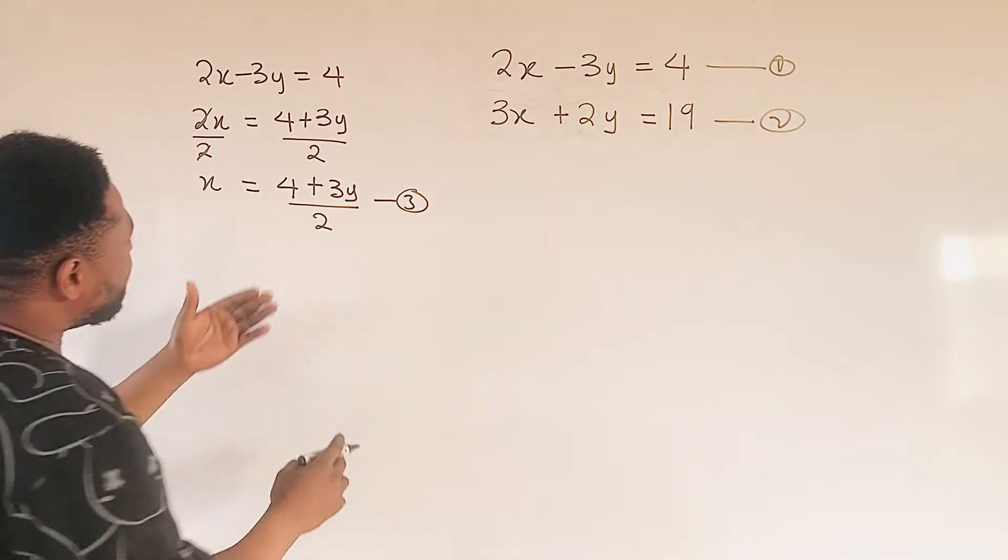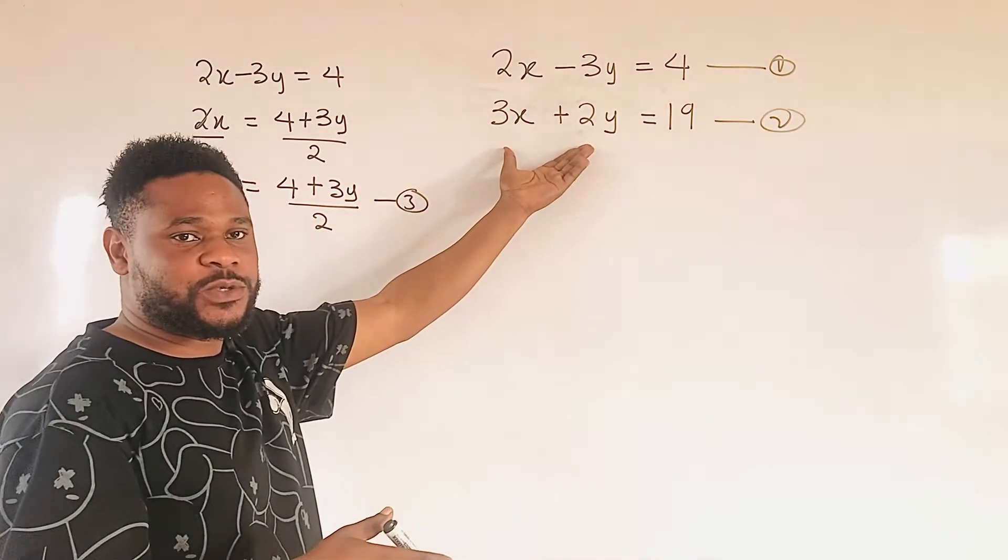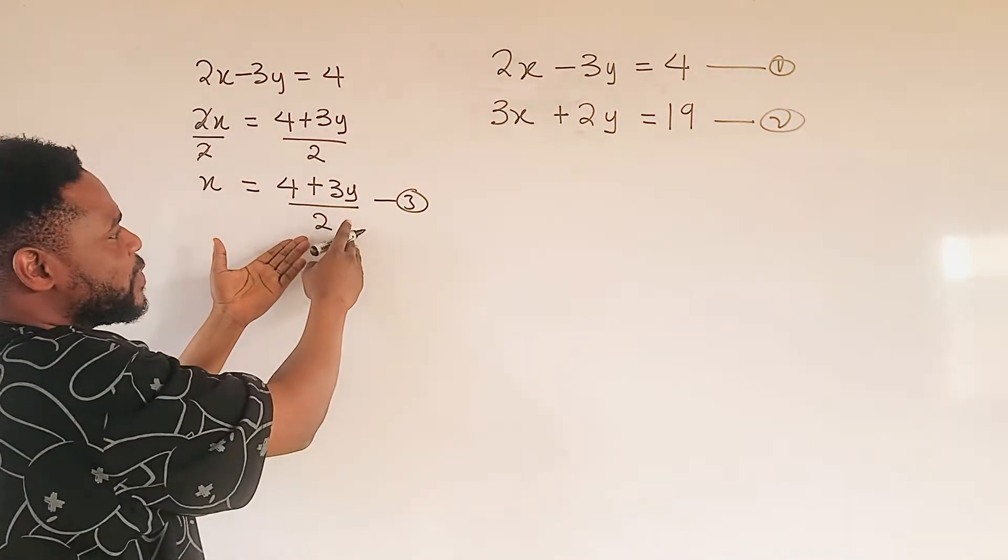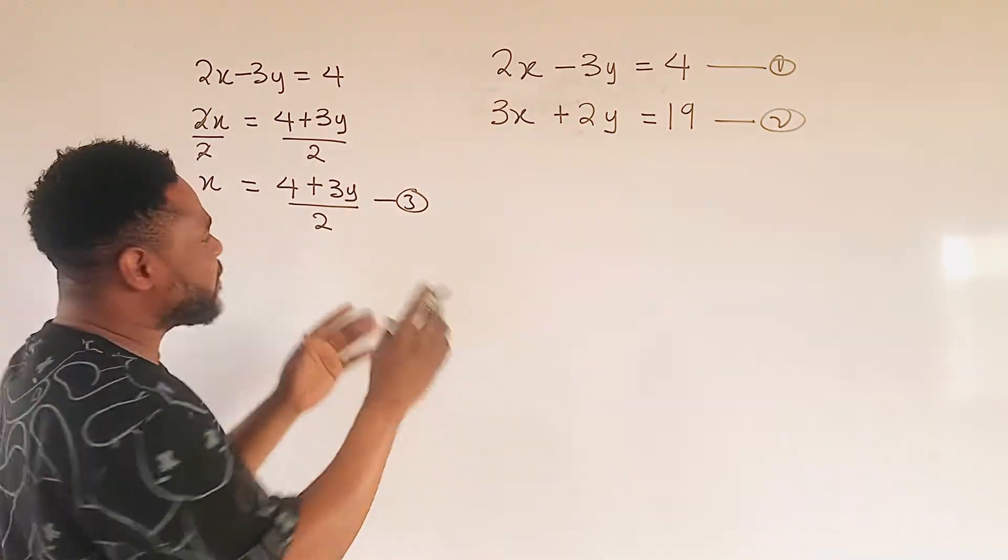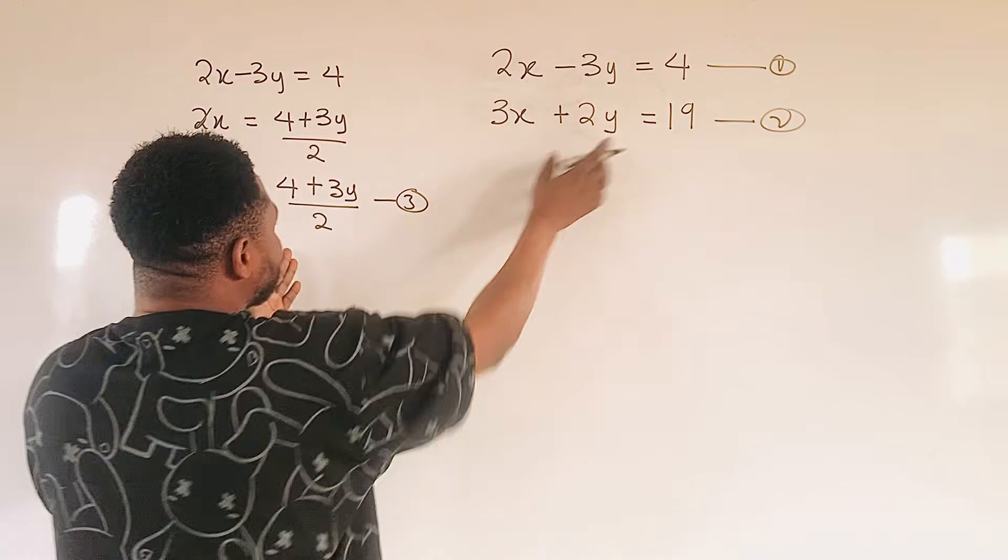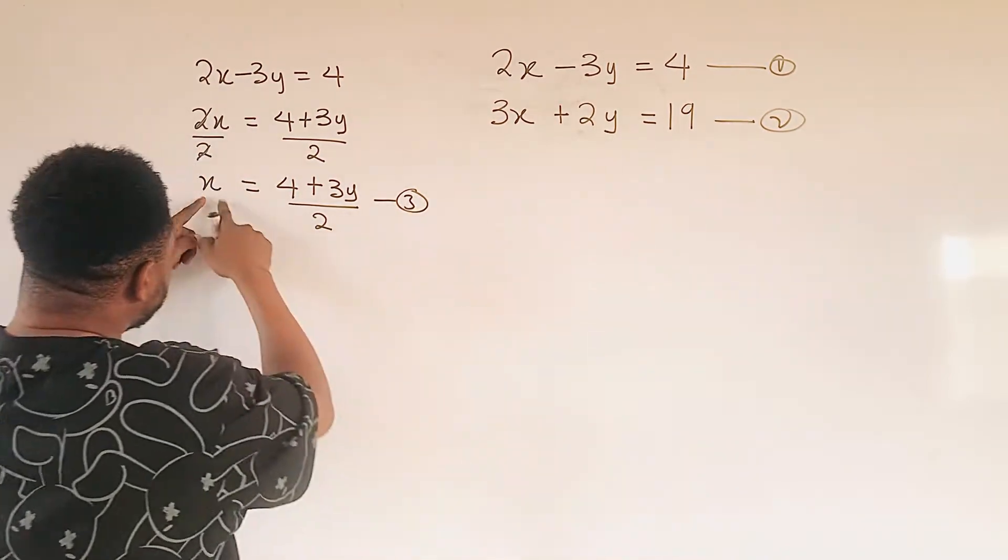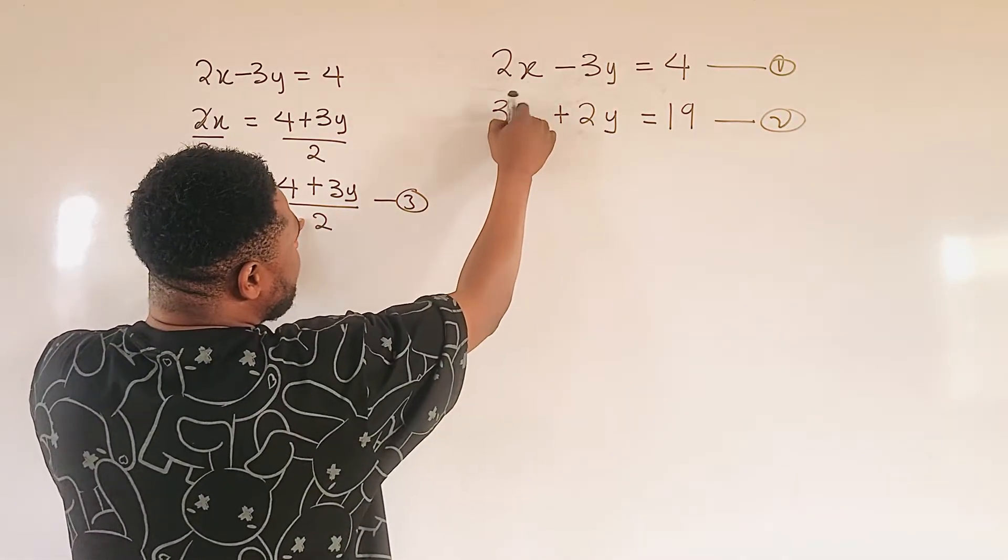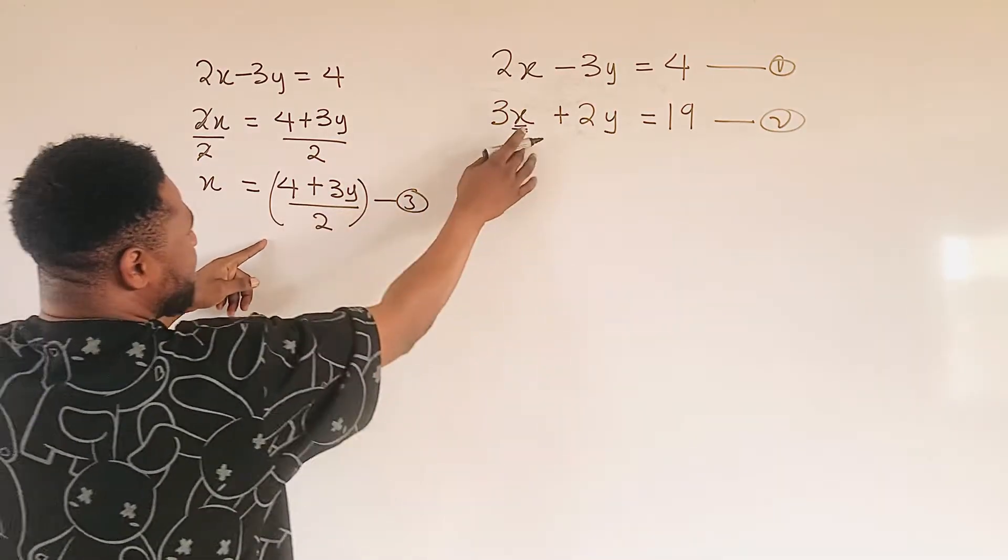Now, I'm going to substitute equation 3 into equation 2. Don't forget, equation 1 gives us equation 3. So we don't substitute equation 3 into equation 1. We don't do that. We'd rather fix it into equation 2. So putting equation 3 into equation 2, if x is equal to this, and we have our x here, anywhere we see x in equation 2, we put the whole of this there.